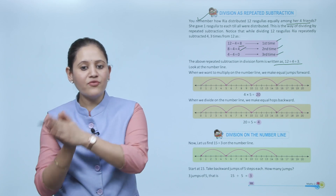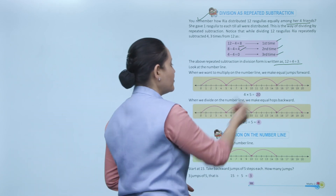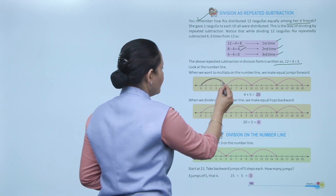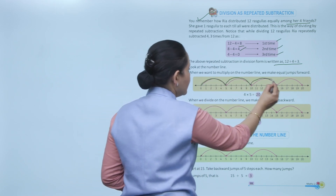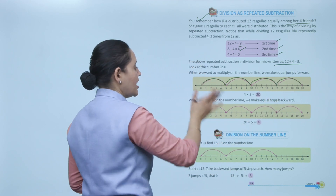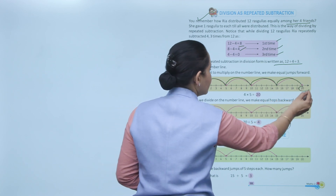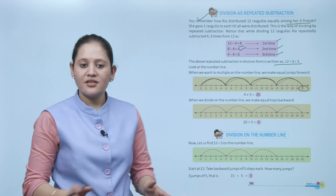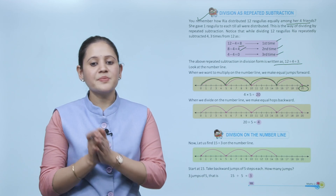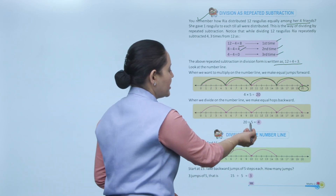On the number line, when we multiply we make equal jumps forward. For example, 4 into 5: we jump 5 places four times, so 4 into 5 equals 20.